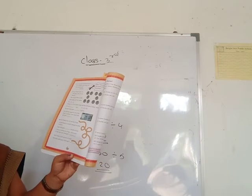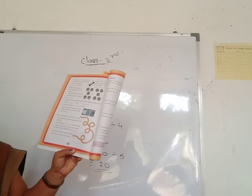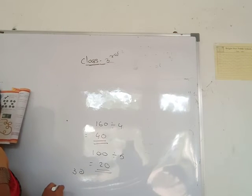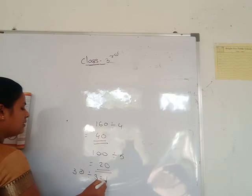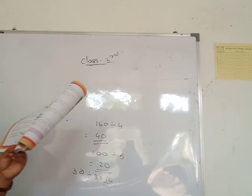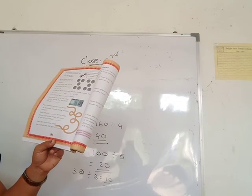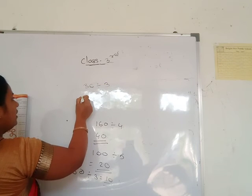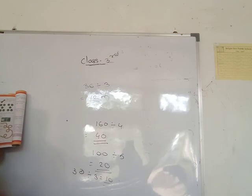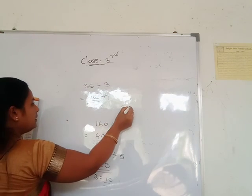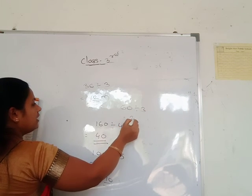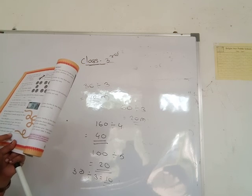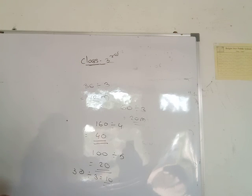Hari Parshad has thirty meters of rope and distributes it equally among his three children. Each child gets ten meters of rope — 30 divided by 3 equals 10. If there is 36 meters of rope and three children, each gets 12 meters. If there are 60 meters of rope and three friends, each gets 20 meters.